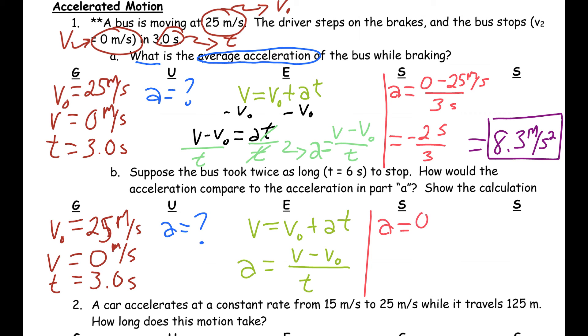So, it's still going to be 0 minus 25 meters per second divided by 6 seconds. Let me erase that and put it in a little bit cleaner. So, this is going to be 6 seconds, not 3 seconds. So, it's negative 25 divided by 6, which should give you 4.2 meters per second squared as your acceleration. And it is less than our original, so it works out splendidly.